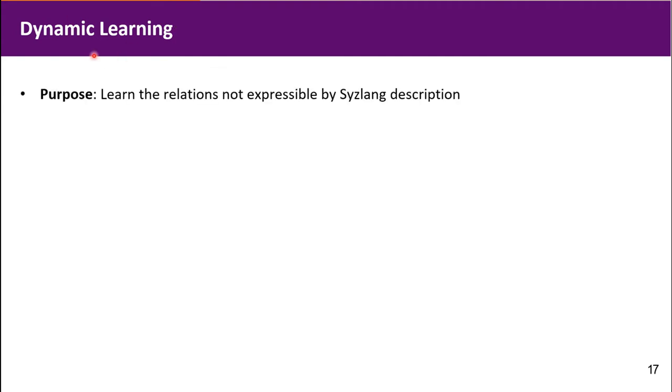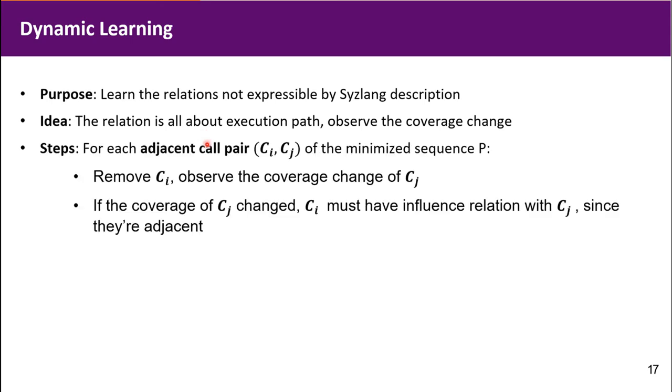Then we come to dynamic learning. We want to learn the relation not expressible by Syslang description. The relation is all about the execution path. How about we observe the coverage change. For each adjacent call pair ci and cj, we first remove ci.